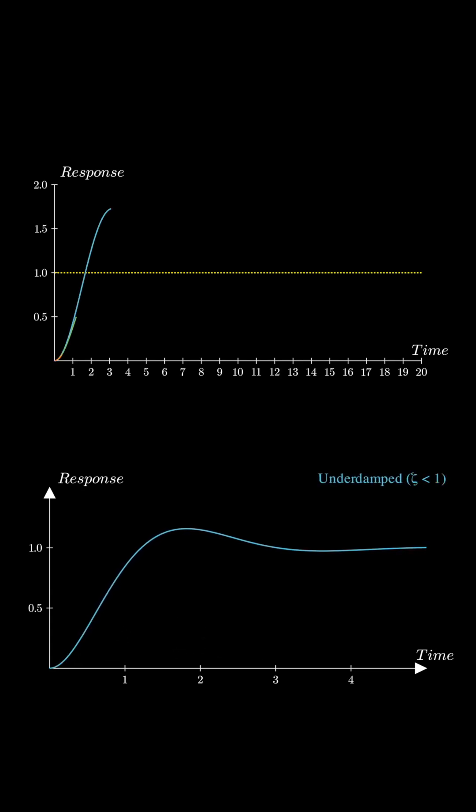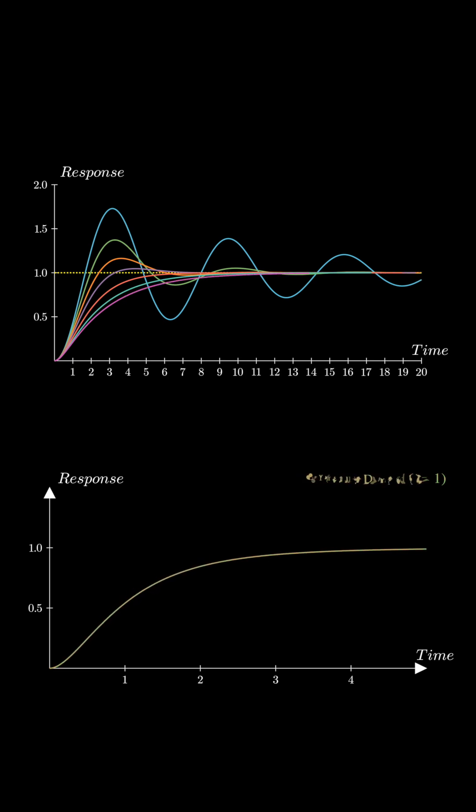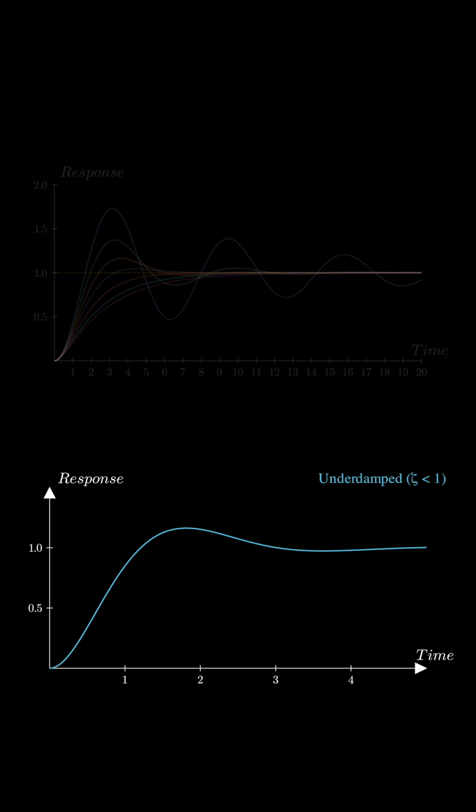So, the damping ratio zeta is like a tuning knob for your system. From oscillatory to smooth and slow, it defines how your system reacts. Next time you design a system, remember how zeta shapes its response. Subscribe for more control system tips.